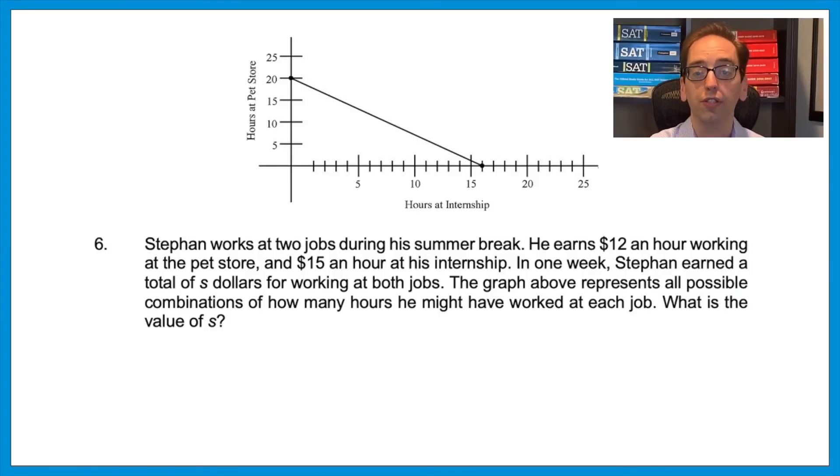Question six: Stefan works at two jobs during a summer break. He earns $12 an hour working at the pet store, and $15 an hour working at his internship. In one week, Stefan earned a total of S dollars working at both jobs. The graph above represents all possible combinations of how many hours he might have worked at each job. What is the value of S? So this is a little tricky. We could approach it with a let statement or a very complicated system of equations, but let's not even get into any of that. Let's look at this question a much easier way. If they give you a graph measuring two rates, you can use the intercepts. And the reason why, it means the other value would then be zero, which means it'll disappear.